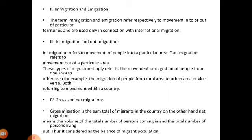Gross and net migration — gross migration is the sum total of all migrants in the country. Net migration, on the other hand, means the difference between the total number of persons coming in and the total number of persons leaving out. Thus it is considered as the balance of the migrant population.